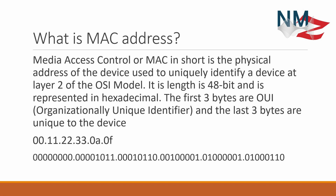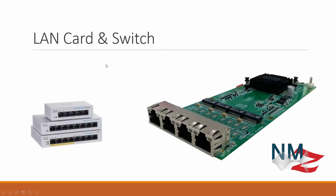If everyone tried to make their own MAC address, duplicates might exist across many devices. But since the first three bytes are assigned by the IEEE, each organization receives a unique three-byte prefix and can then vary the remaining three bytes to create different addresses for their devices. The full 48-bit address is divided into six bytes of eight bits each.